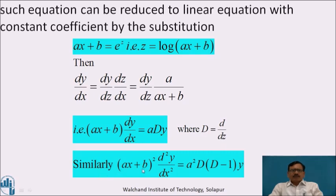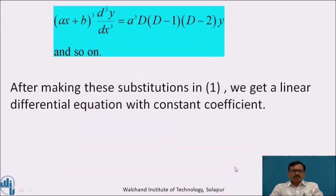Similarly, (ax + b)² d²y/dx² = a² · D(D - 1)y, and (ax + b)³ d³y/dx³ = a³ · D(D-1)(D-2)y, and so on.